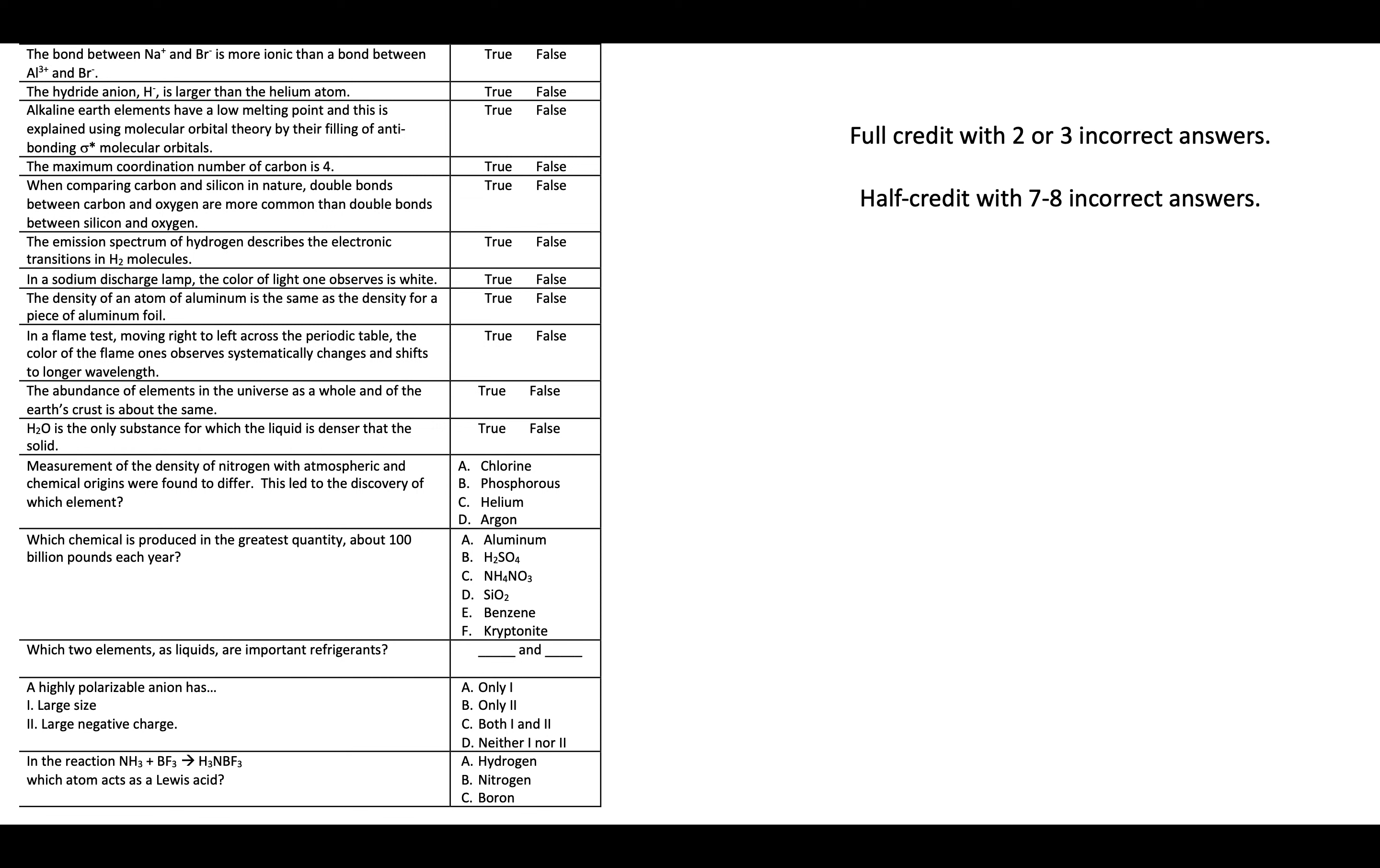This last one right here, a lot of different questions. This was collecting descriptive chemistry over a couple days of class. For a full credit within this entire set, you could make two, three mistakes. That was fine. I still felt big picture you had a good understanding, and half credit was around seven or eight mistakes, and I just sort of prorated from there. So to step through some of these.